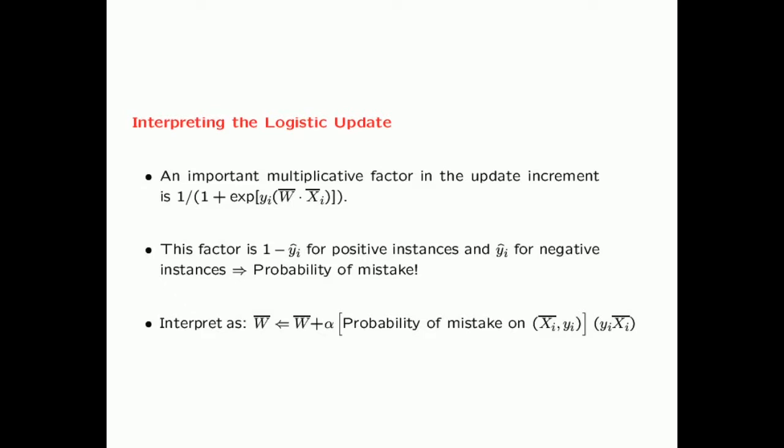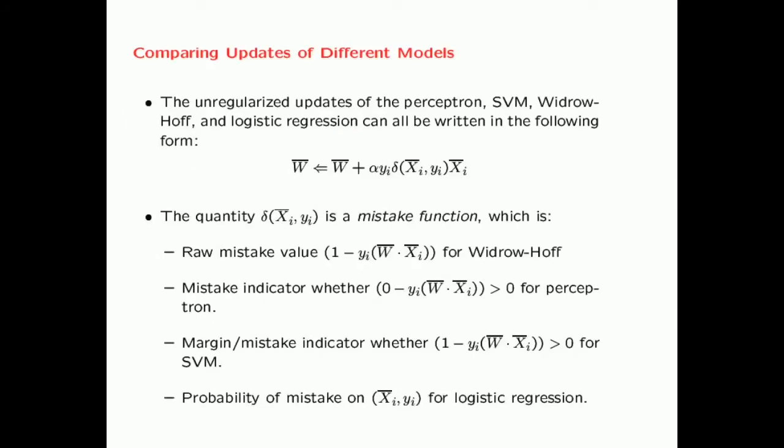This brings us to a natural comparison: how are the updates related across all the models we have seen? There is a unified form of the update that applies to all four models — the perceptron, the SVM, the Widrow-Hoff, and logistic regression. In each case, you add a learning rate times Y_i times X_i to the weight vector. The only difference is the nature of the mistake function, denoted delta(X_i, Y_i). For Widrow-Hoff, it is the raw mistake value 1 minus Y_i * W · X_i.